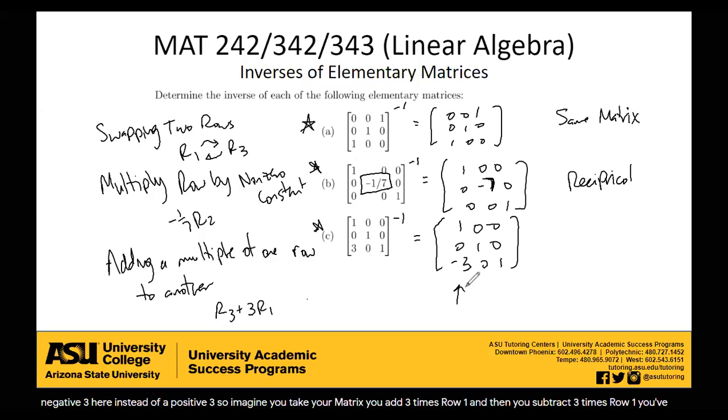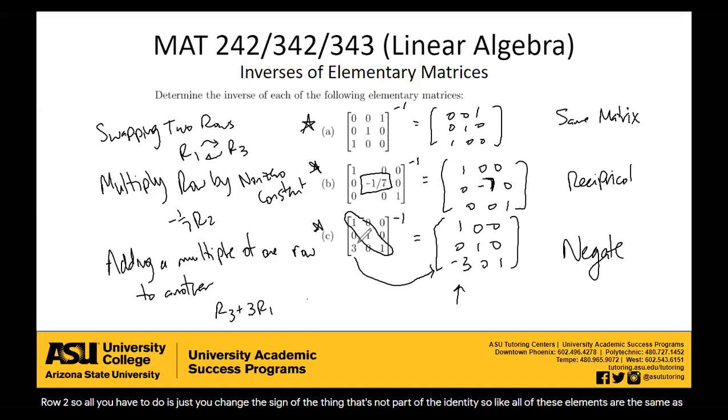So the inverse of, in general, if you're adding a multiple of one row to another, the inverse would just be to negate what you just did. So if you added 57 times row two, you would now subtract 57 times row two. So all you have to do is just change the sign of the thing that's not part of the identity. So like all of these elements are the same as the identity element. The only thing that's not is this three. So the inverse, all you do is just change the sign. If it's positive, make it negative. If it's negative, make it positive. That's what the inverse is. What'd you do up here? You looked at the one thing that wasn't part of the identity, because it's negative one seventh. And what'd you do? You just found the reciprocal. Negative seven. What'd you do here for this first one? You didn't do anything. You left it as the same.